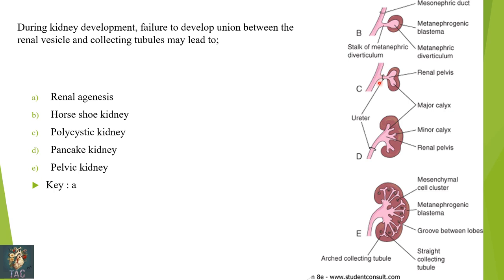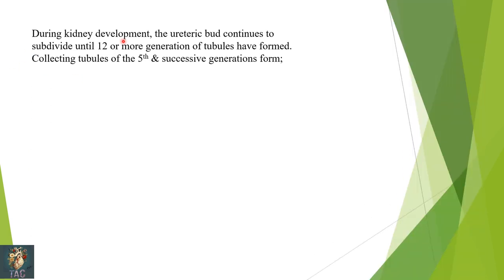In this diagram you can see the metanephric blastema or metanephric mesoderm — the darker color is metanephric mesoderm and the light pink area is the metanephric bud. These two are responsible for formation of proper nephrons in the kidney. During development, if there is failure to develop union between vesicles and collecting tubule, it will lead to agenesis of the kidney.